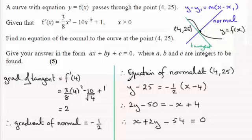So you can see this is identical to that form. And a would be 1, b would be 2, and c would be minus 54.